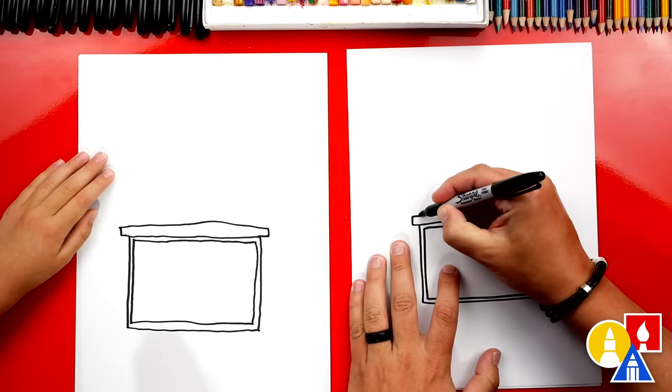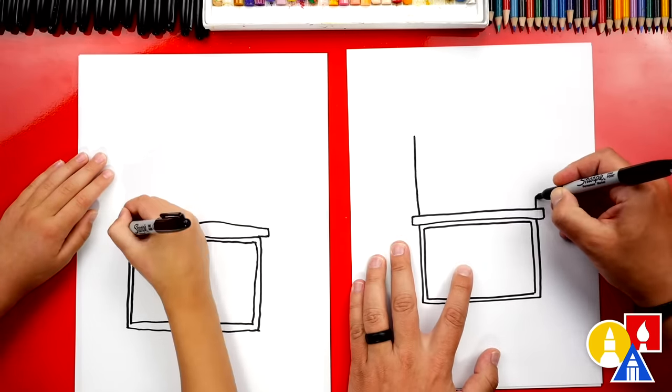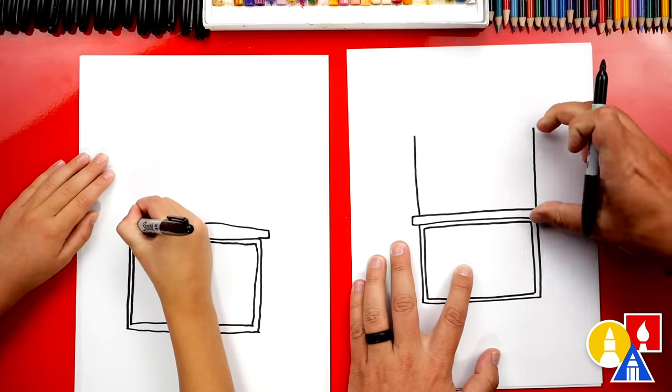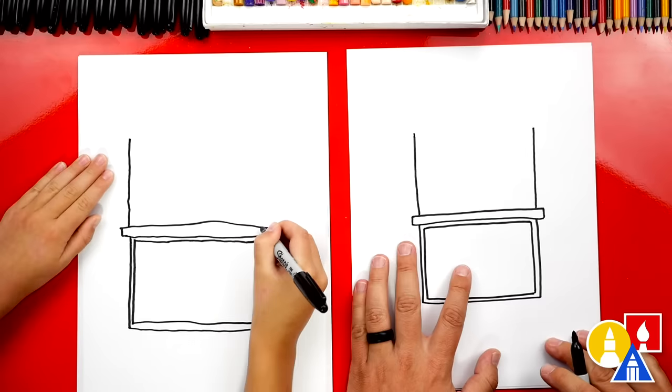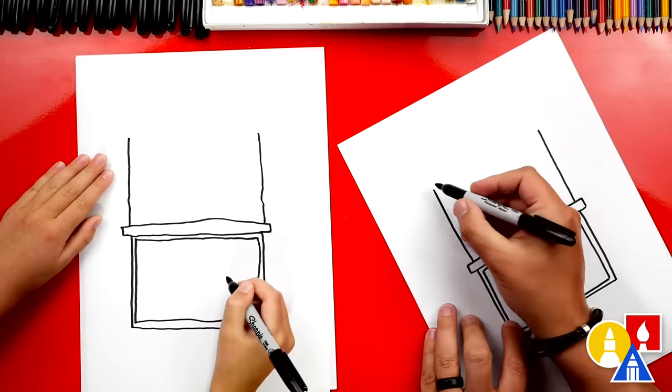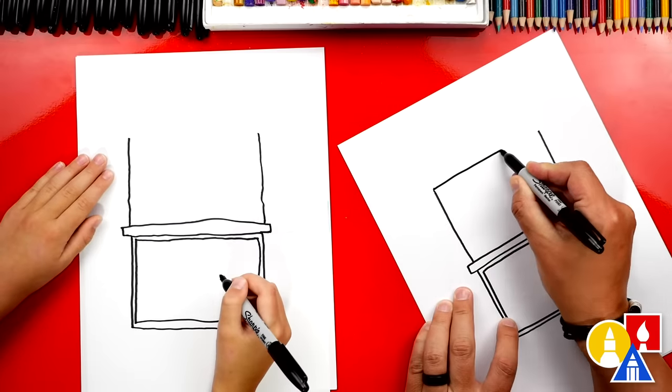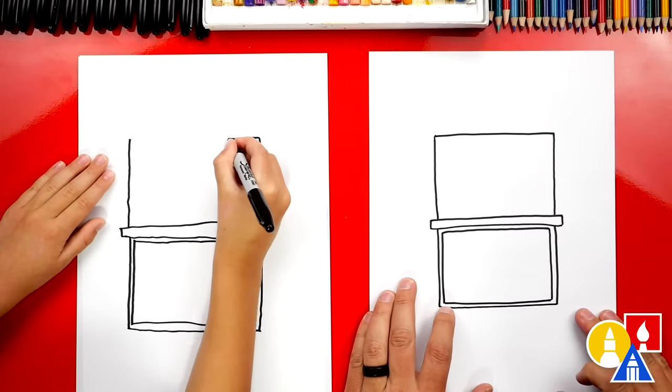Now we're going to draw a really long line coming up on the left and also on the right, and we want these to match, to be the same length. This is going to hold the top of our hot dog stand, the part that's going to give shade if it's really sunny outside. And we're going to connect the top. Look at that, that's another rectangle shape.